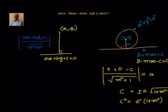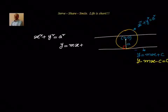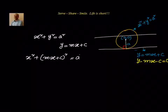Let's look at the other approach. We know the equation of the circle is x square plus y square equal to a square, and we also know y equal to mx plus c. The points which are on both the circle and the line will satisfy both conditions. So we substitute in place of y the expression mx plus c, and it becomes x square plus mx plus c whole square is equal to a square.